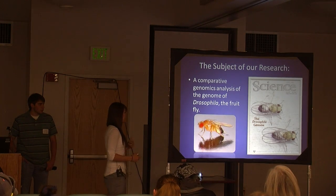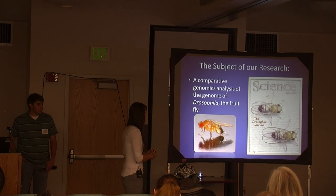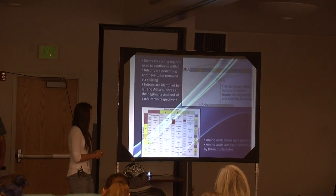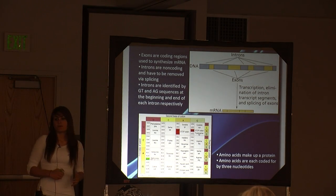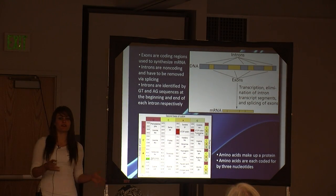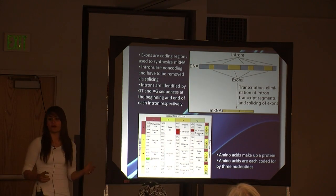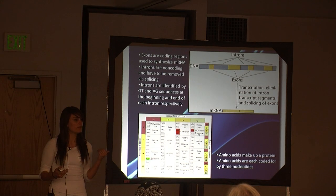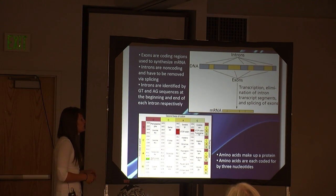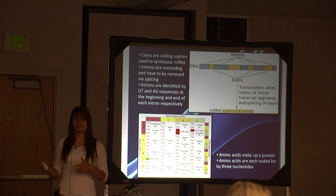Our subject of research is Drosophila mojavensis and melanogaster species. When we look at DNA we see that we have portions of coding sequence and portions of non-coding sequence. Coding sequence is known as an exon and non-coding sequence is known as introns. These introns are spliced out before the mRNA can be translated into the functional protein working in the cell. Exons and introns are designated by AG and GT sequences.